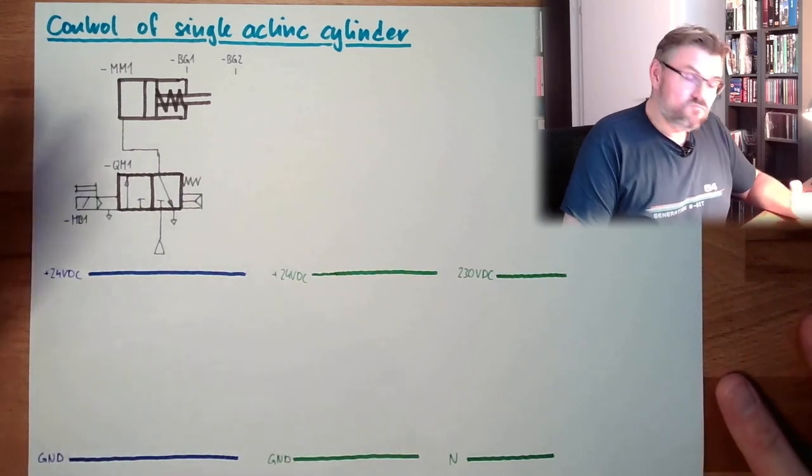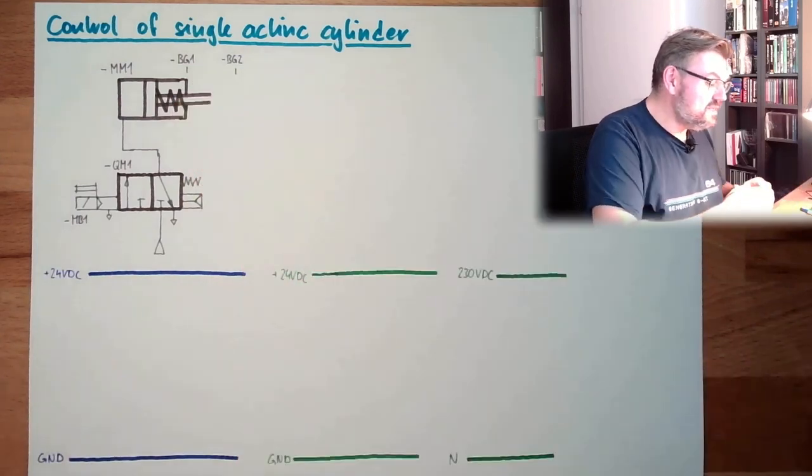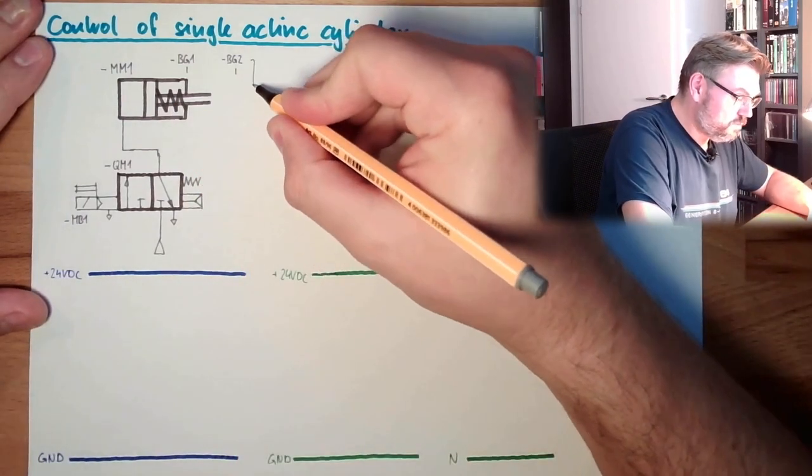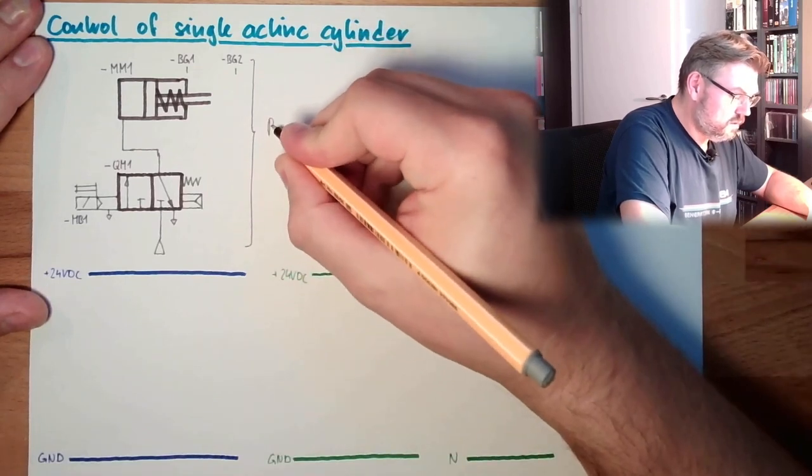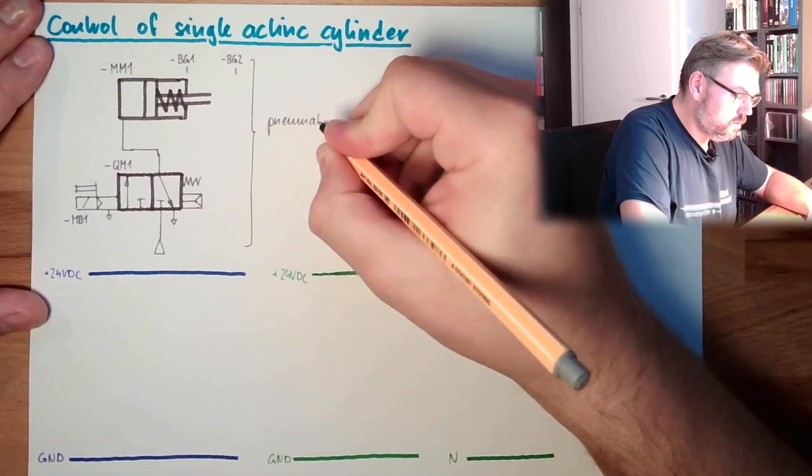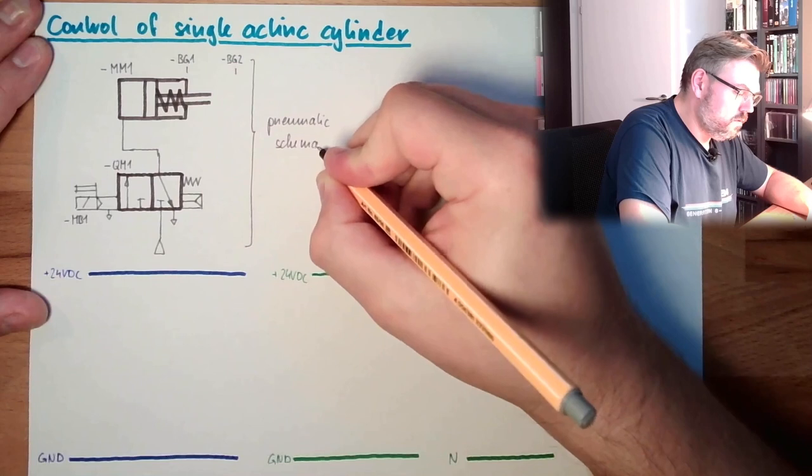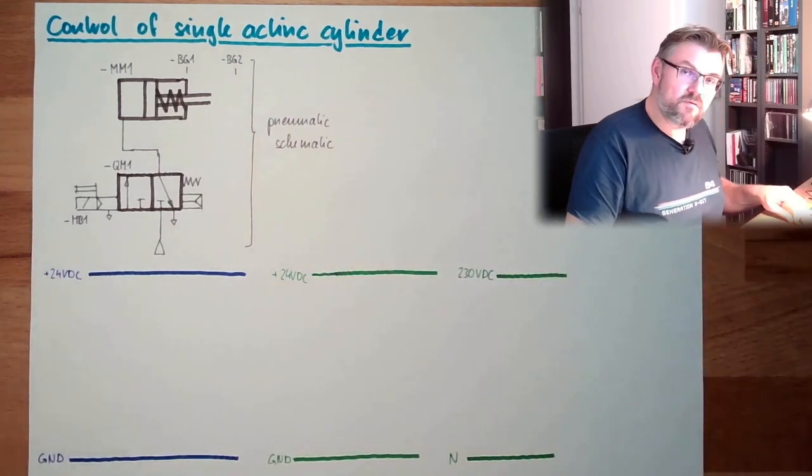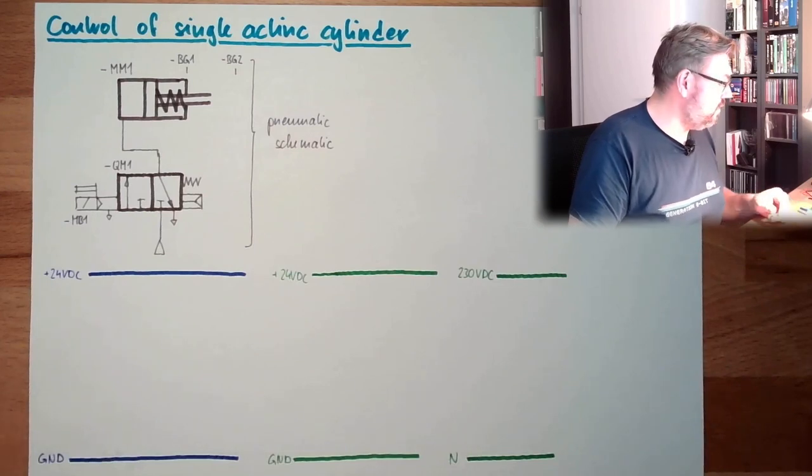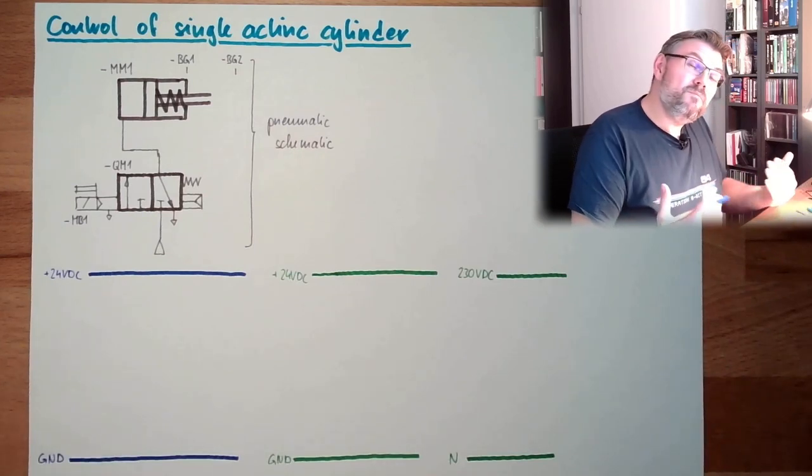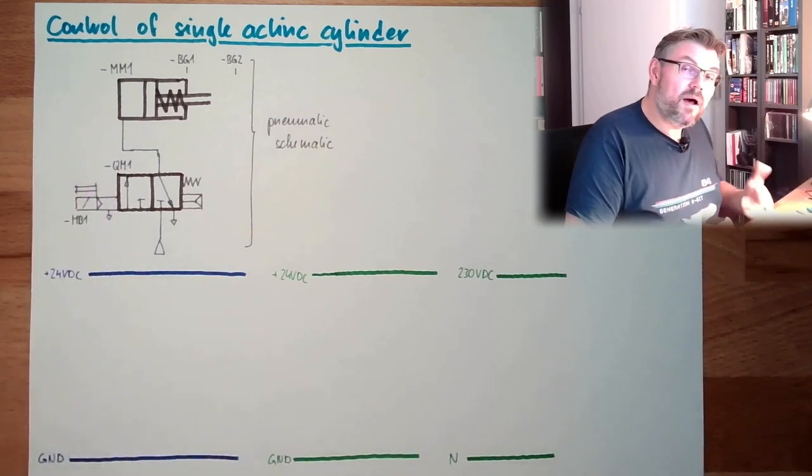There might be the possibility to do this directly, but this is already the pneumatic schematic. So this is complete. More is not there. And now the real control is in the control part, which is electrical.